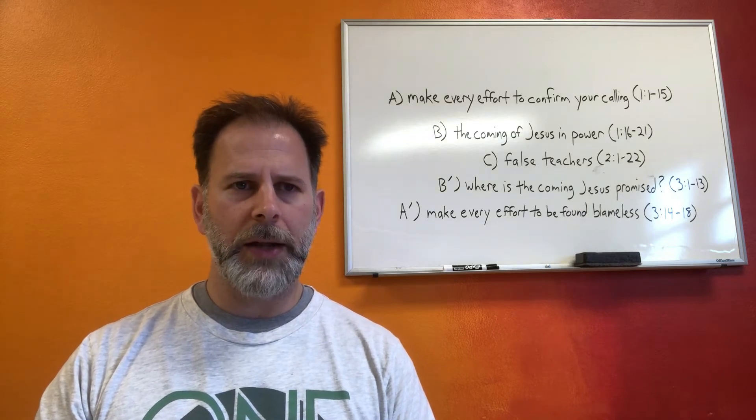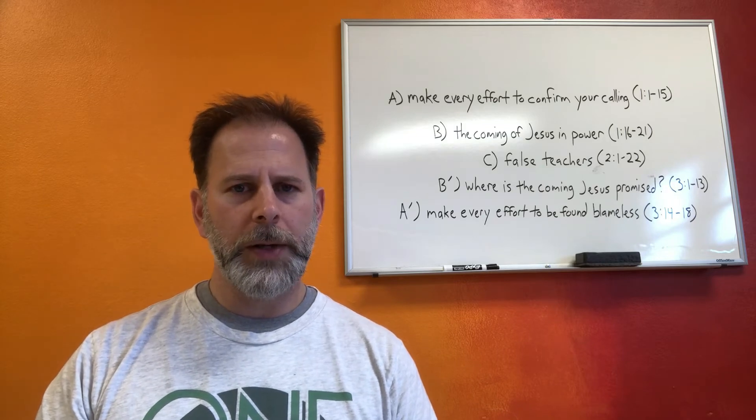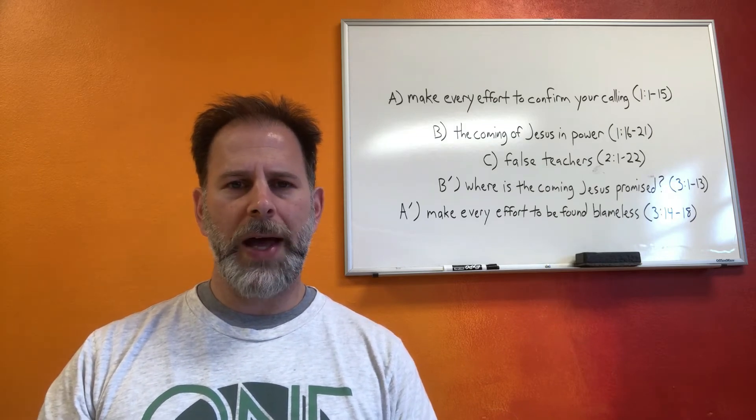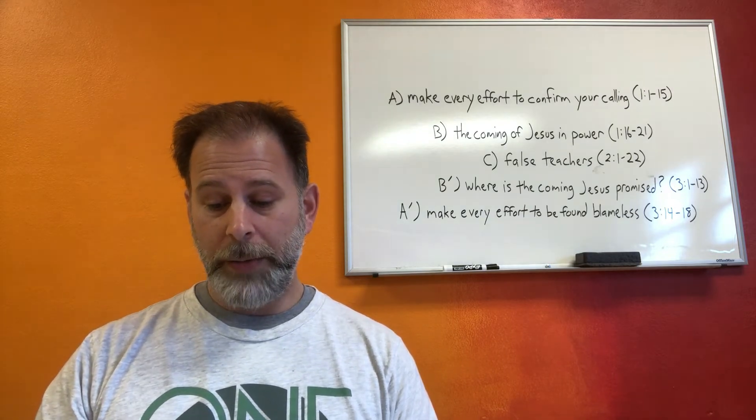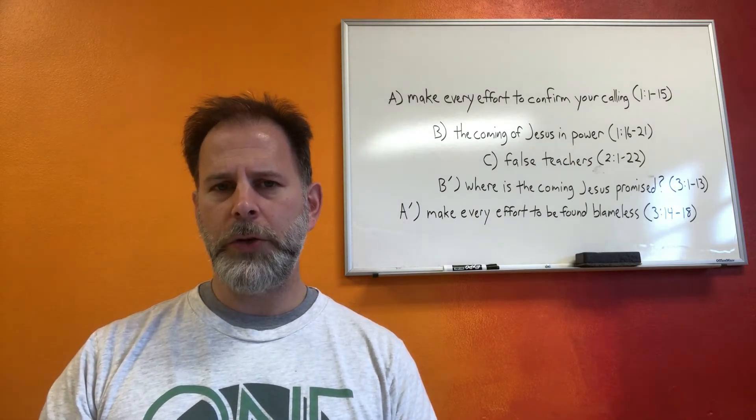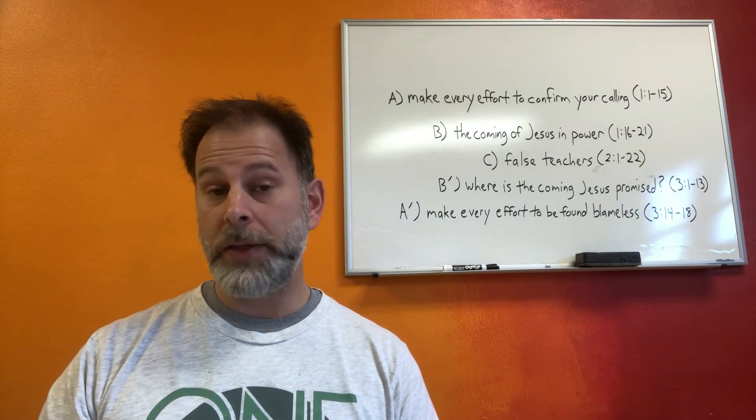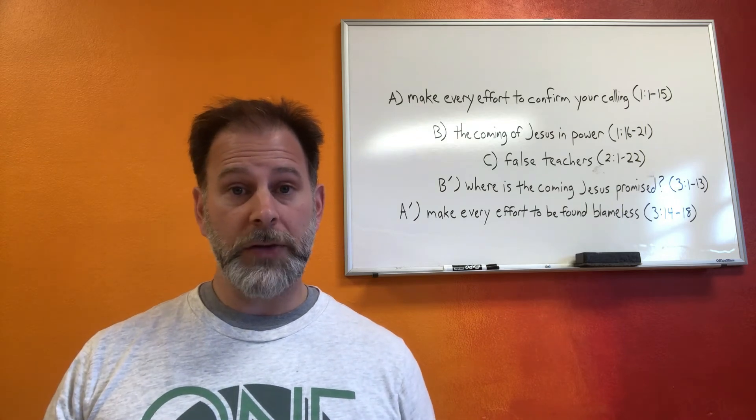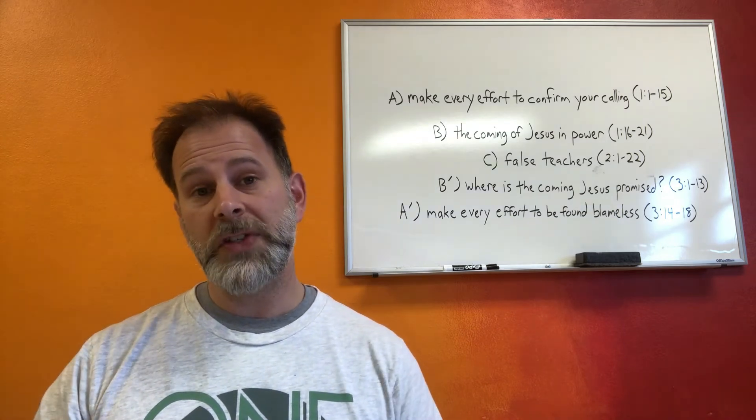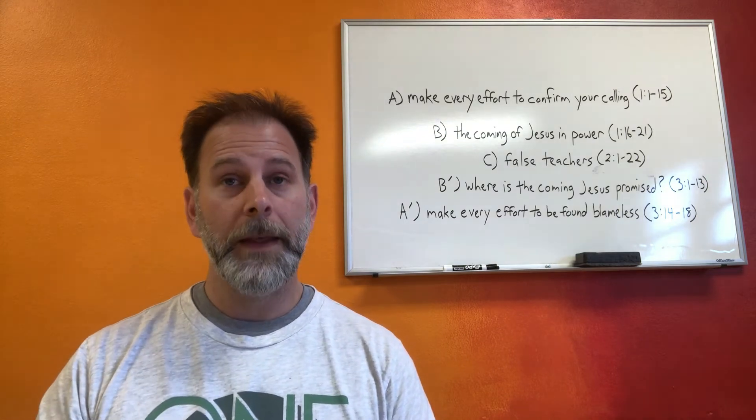We shouldn't be surprised that he currently is talking about the Mount of Transfiguration, because as we had pointed out last time, there's all these allusions that already started in the paragraph before. Peter refers to his body as the tent of this body, and that word tent is what he used when he saw Jesus and Moses and Elijah on the Mount of Transfiguration. He said, Hey, we should put up tents so that each one of you could stay and we could extend this experience for a while.